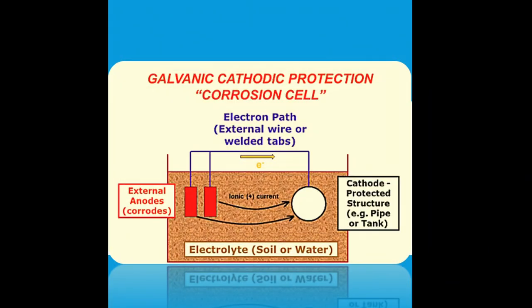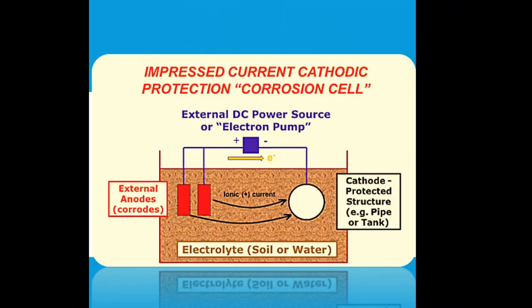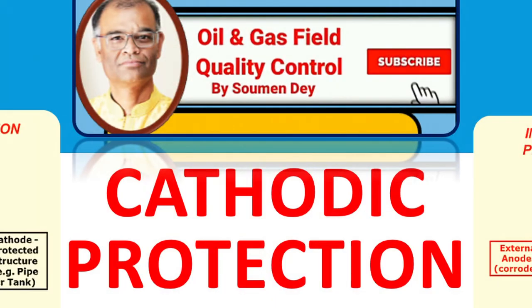There are two types of cathodic protection: one is galvanic cathodic protection and another is impressed current cathodic protection. Before starting this subject, let us know some very basics of cathodic protection.